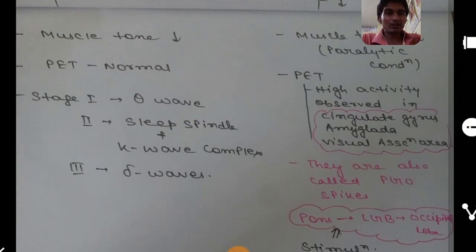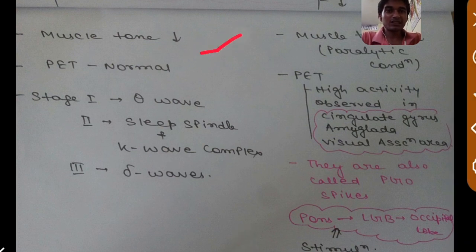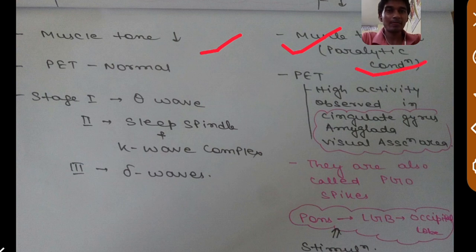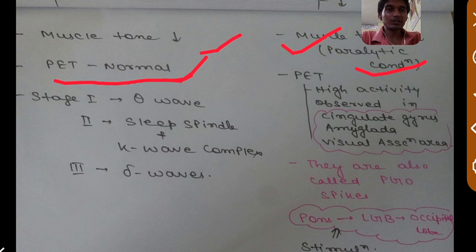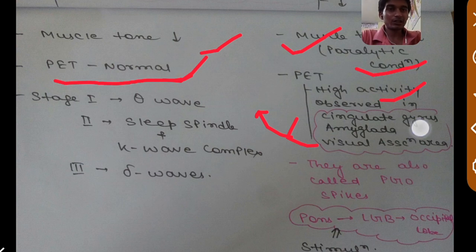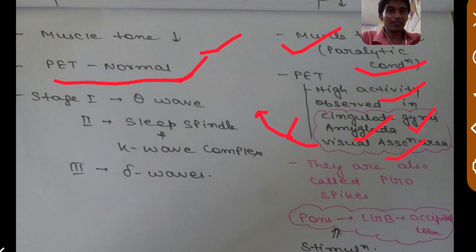Muscle tone is decreased in NREM but even more decreased in REM — almost a paralytic condition, especially in the neck region. In NREM sleep, the PET scan is normal, whereas in REM sleep it is not normal, showing high activity in three areas related to emotions: the cingulate gyrus, amygdala, and visual association area. Primary sensory area activity is decreased but visual association area activity is increased, which aligns with the emotionally vivid dreams of REM sleep.